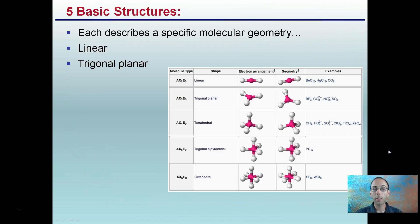So the five basic structures, and we'll get into them in detail. I present them here: linear, trigonal planar, tetrahedral, trigonal bipyramid, and octahedral. So let's get into it here.